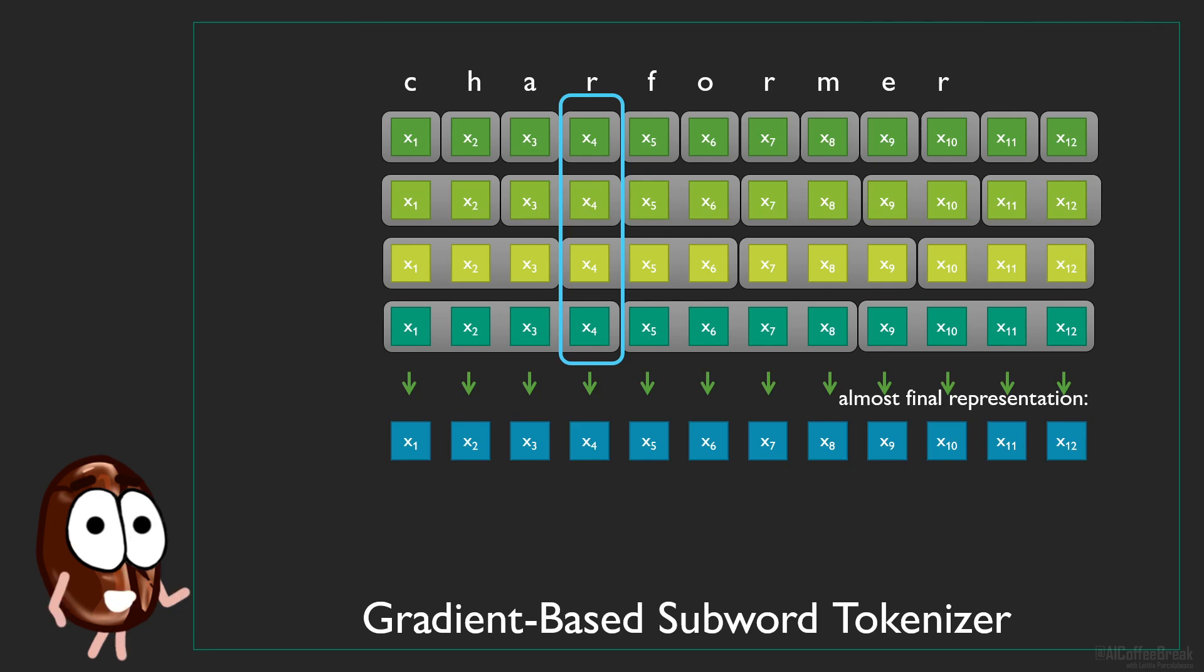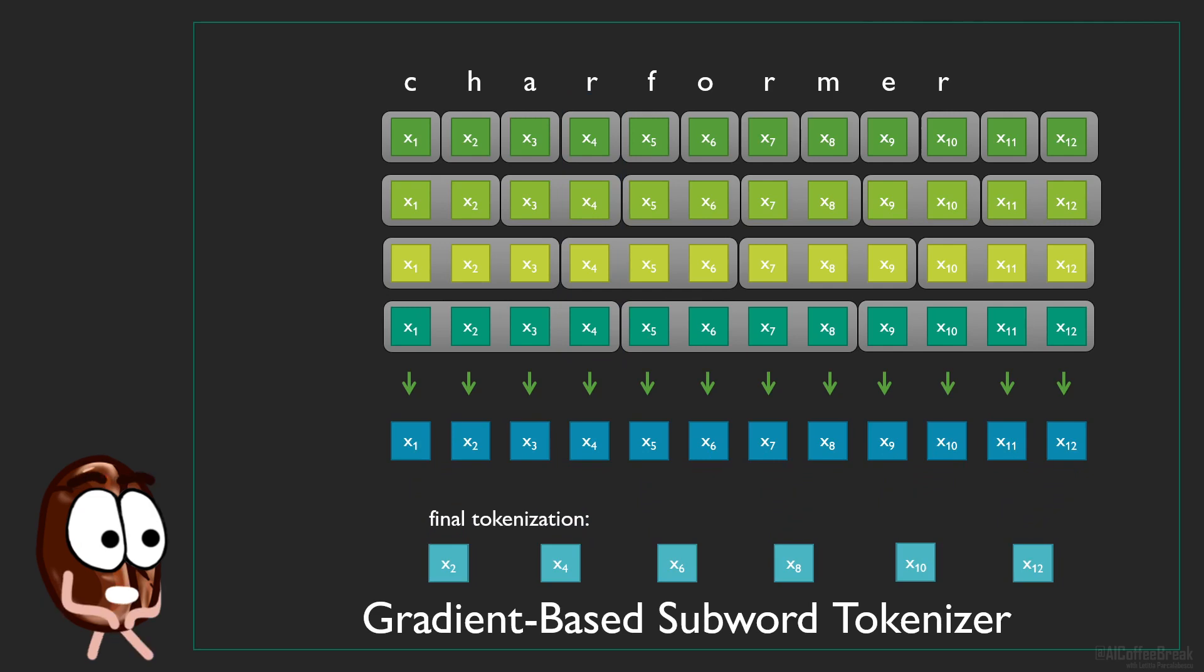These new L learned character representations are downsampled again by a mean pooling operation over neighboring representations. And this is again hard-coded, not learned. The only learnable step in this GBST tokenizer is the scoring of the character engram representation. Wow.